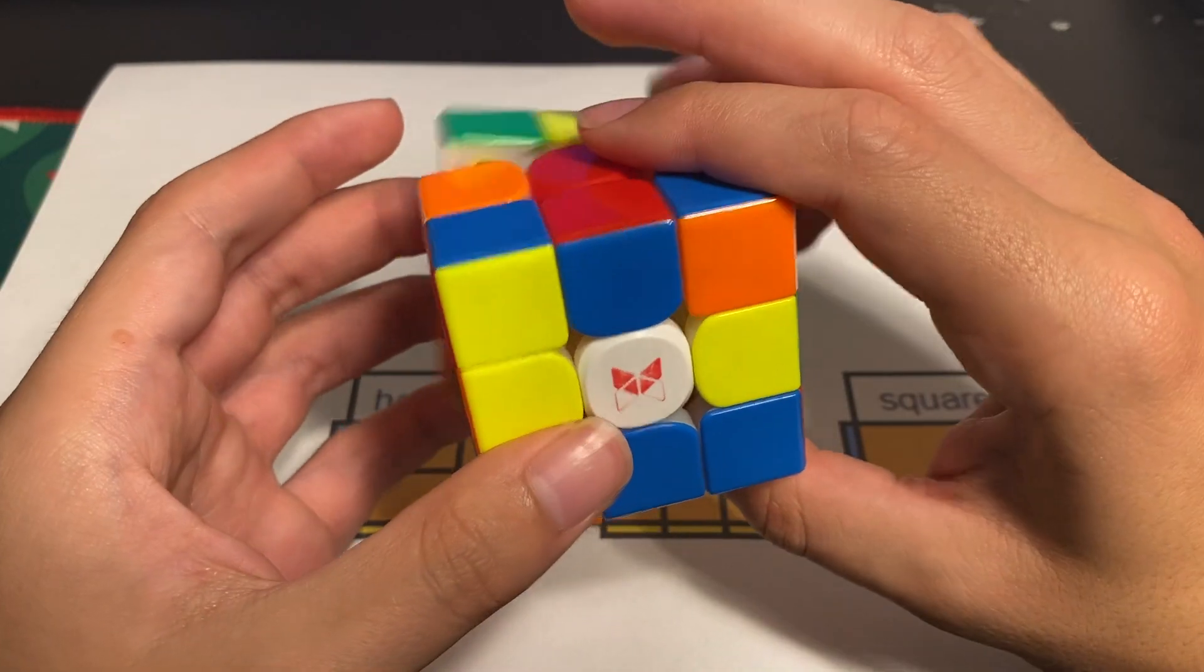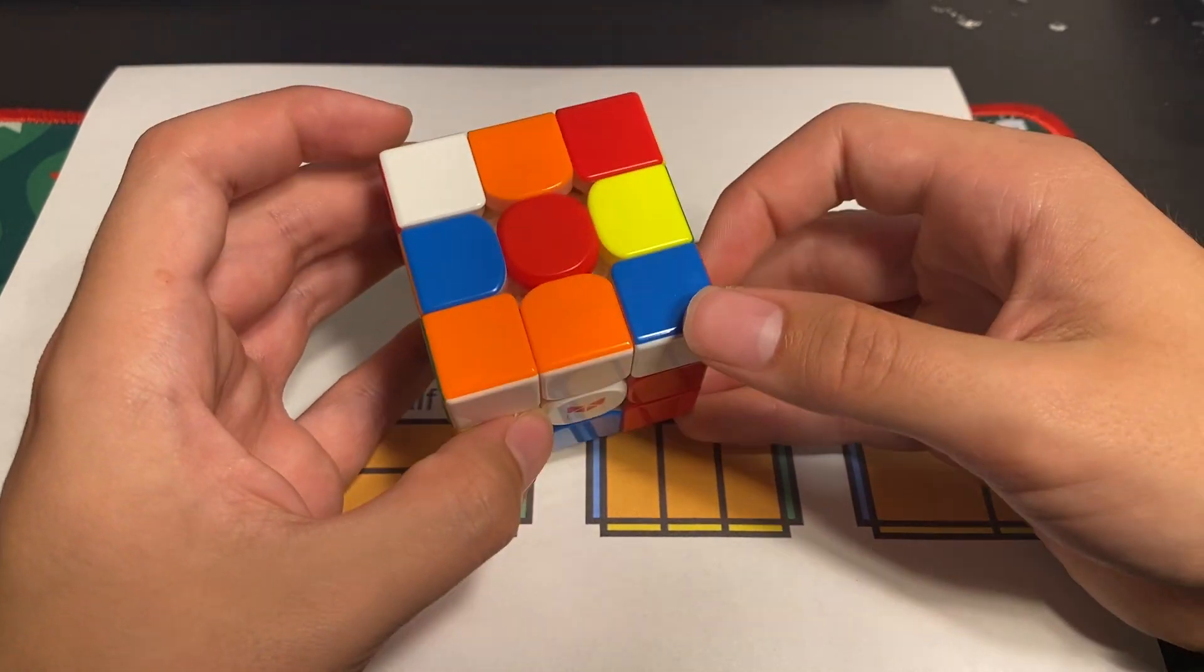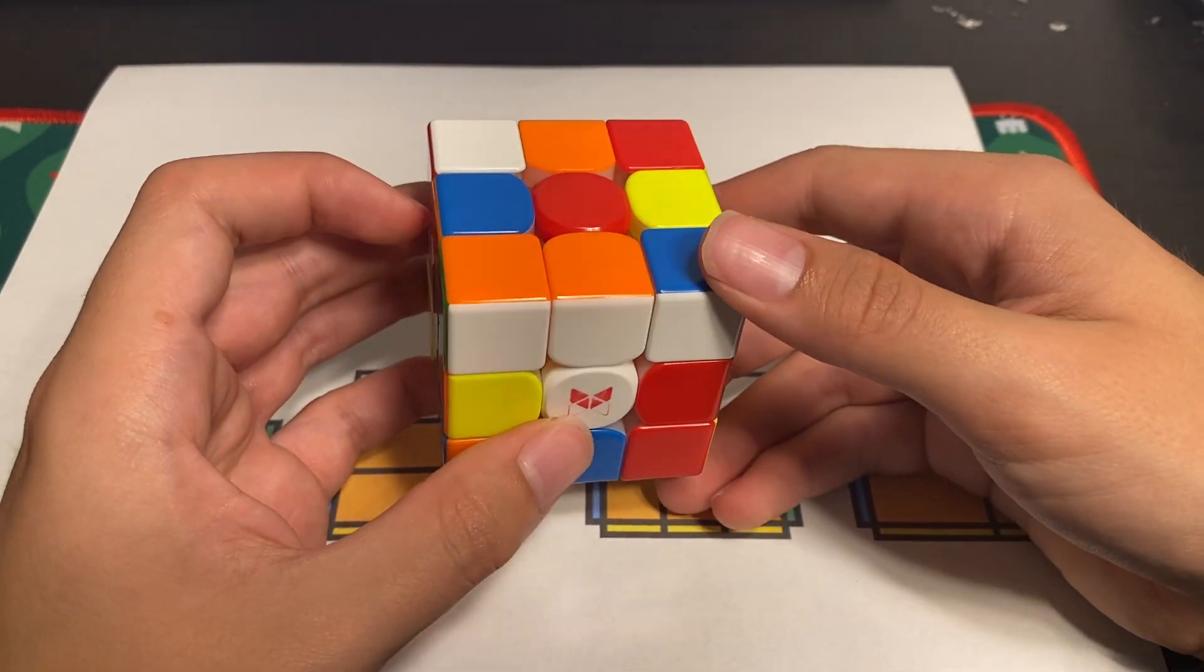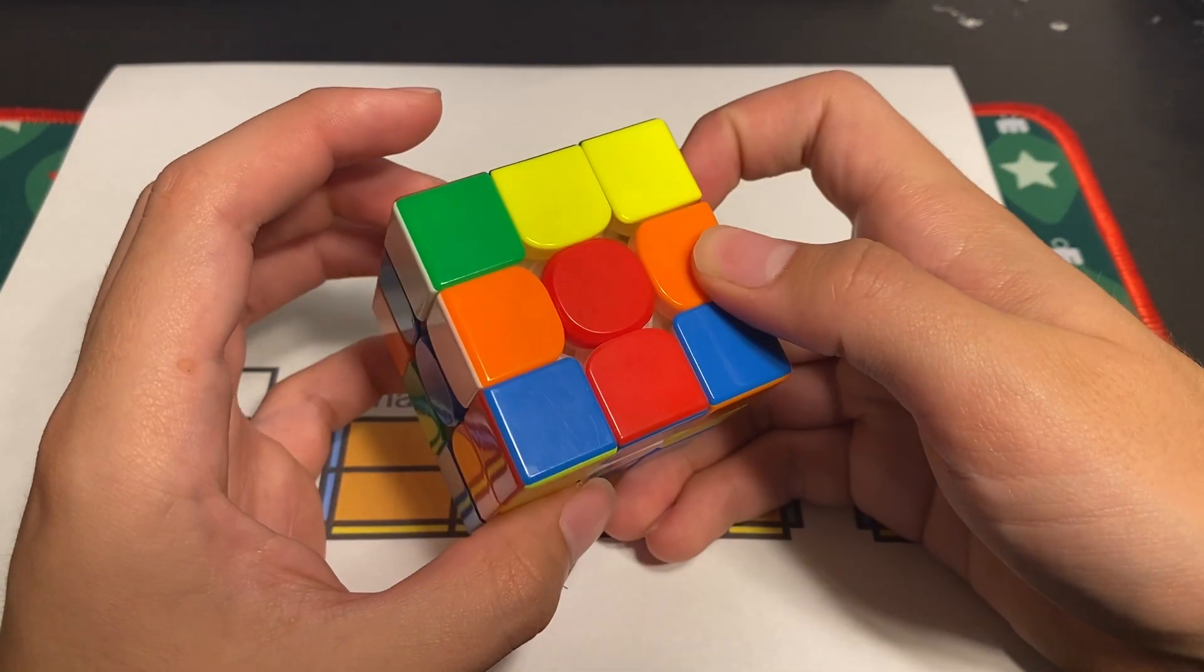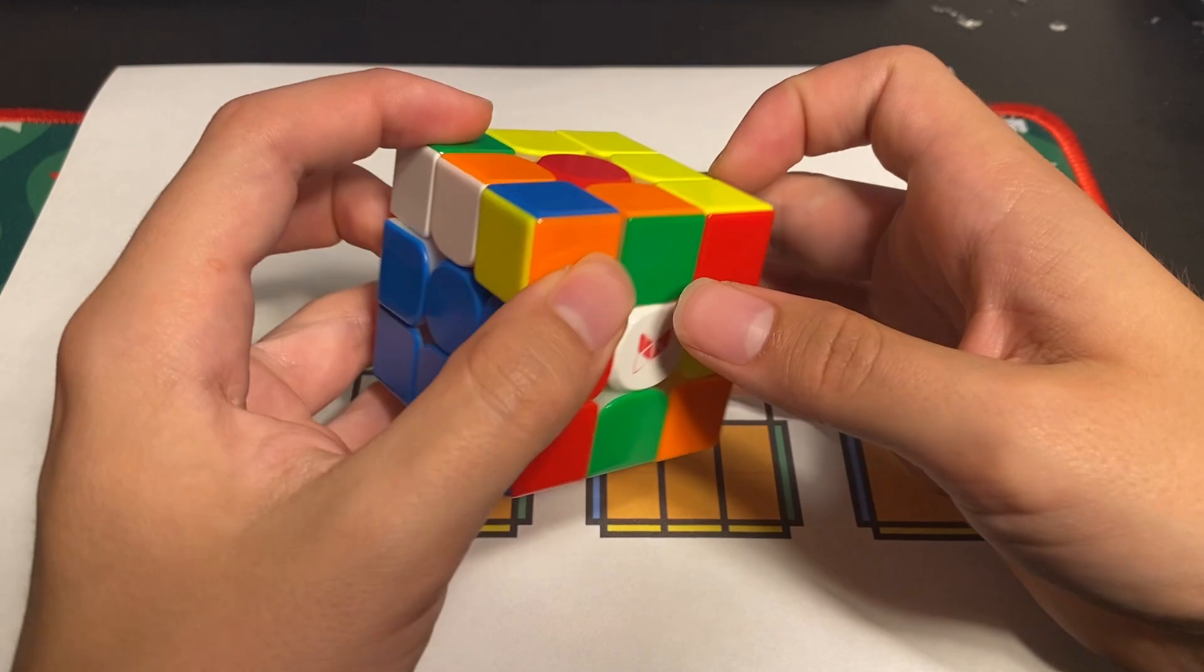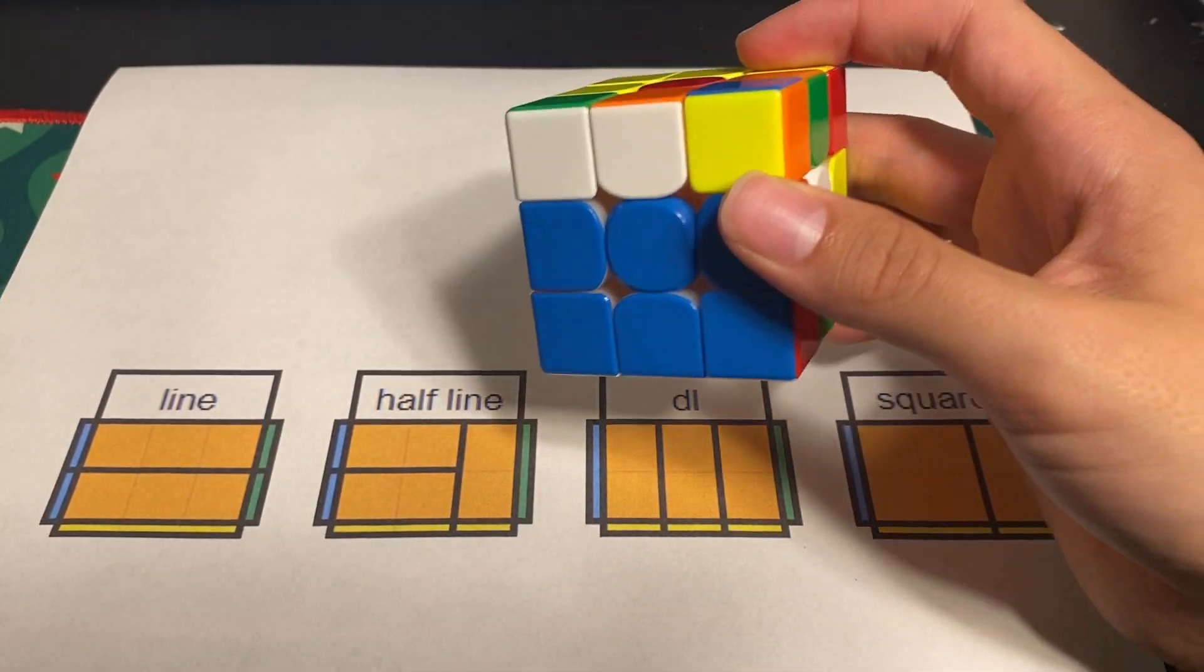You know, there are a ton of different things that could happen with lines. You could have something more like this, which would be harder to spot, but still really good. Right, you do an R prime, then you do a U, then a B, and then you insert this pair. And you build your line block like that.